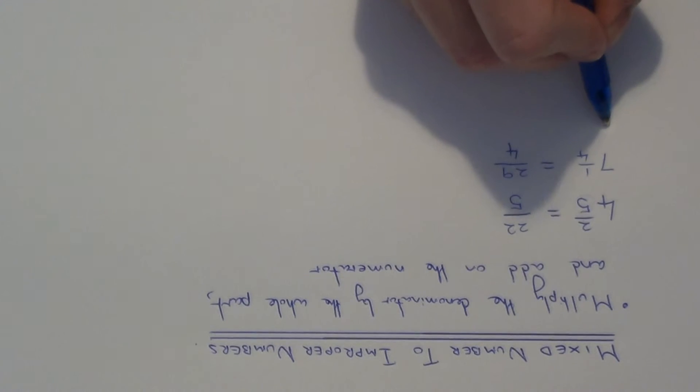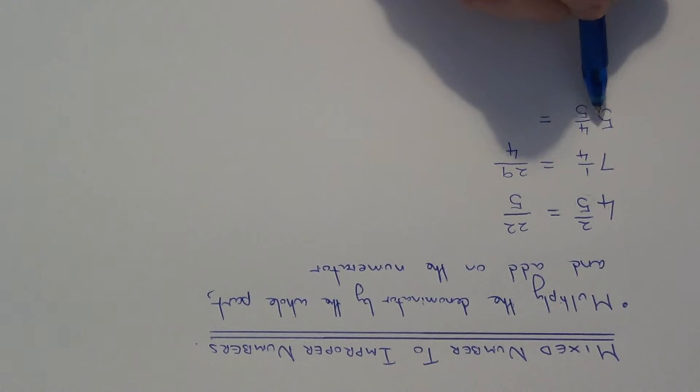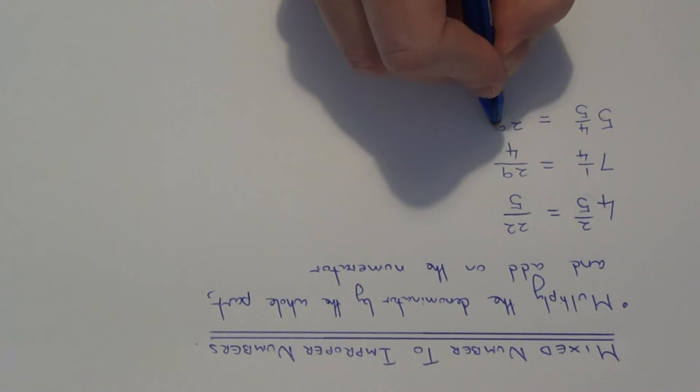Let's do another one. Let's go with 5 and 4 fifths. So again, multiply the denominator by the whole part. 5 times 5 is 25. Add on the numerator. 25 add 4 is 29 again, and your denominator will stay the same.